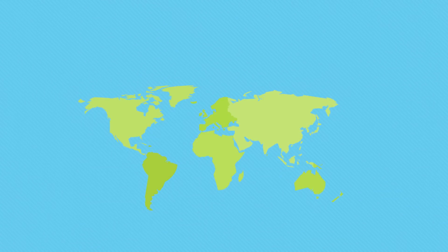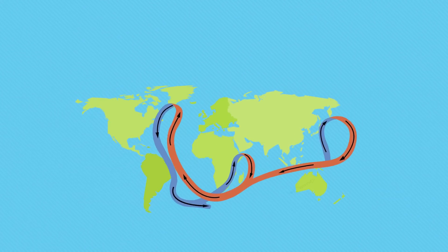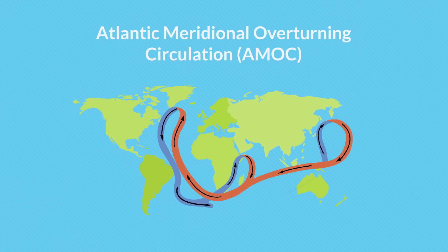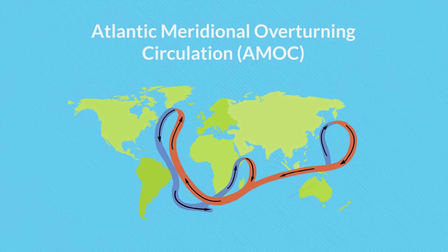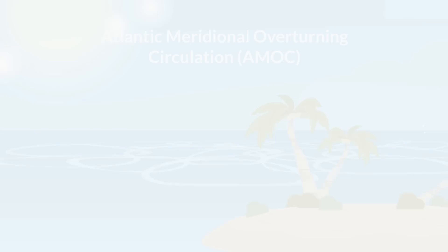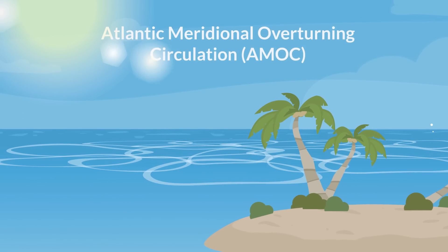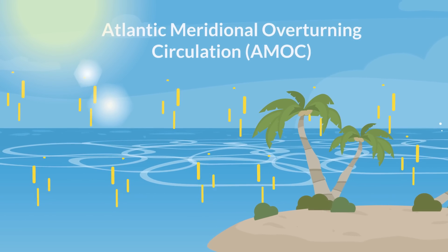The Atlantic Meridional Overturning Circulation, or AMOC, is a system of ocean currents which includes warm water from the tropics flowing into the North Atlantic. The warm climate of the tropics means water evaporates from the ocean and it becomes salty.